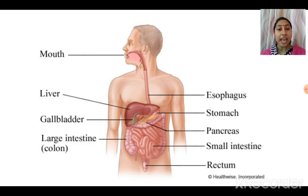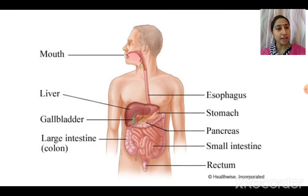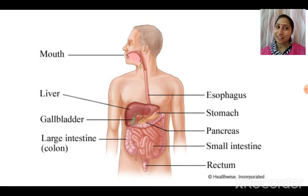In the stomach, digestive juices are released which turn the food into a paste. Then the food enters the small intestine, where more digestive juices help in further breaking down the food and nutrients are absorbed by the blood. After that, the food enters the large intestine where water from the food is absorbed, and then the undigested food is removed from the body through the anus or rectum. That's all about the assessment zone — we'll discuss question answers in the next module. Bye, take care.